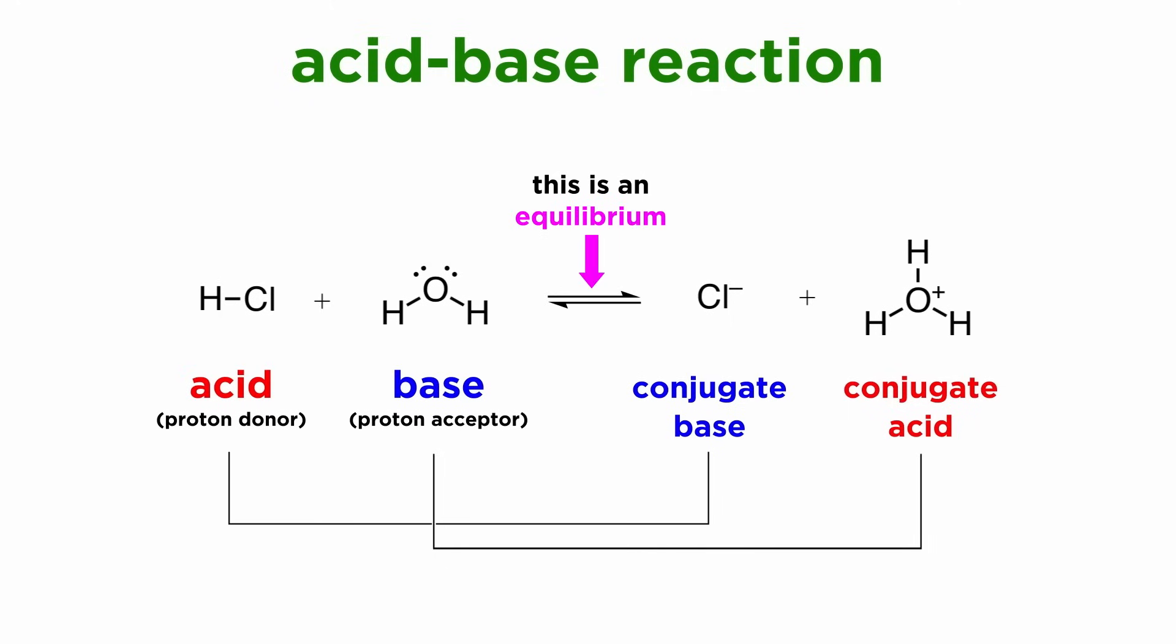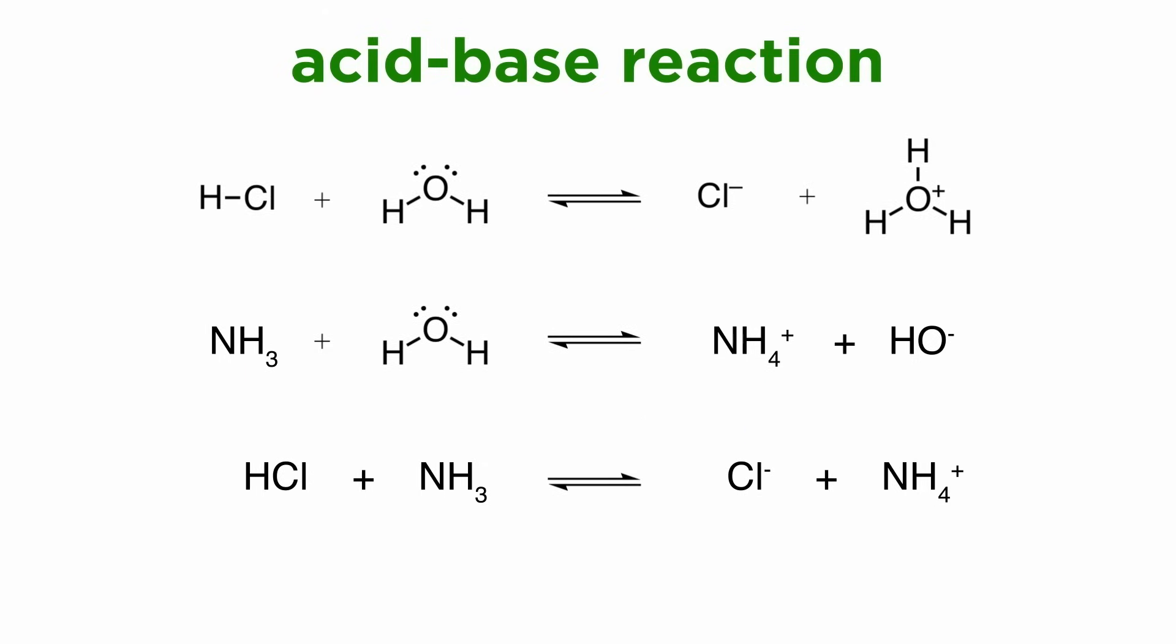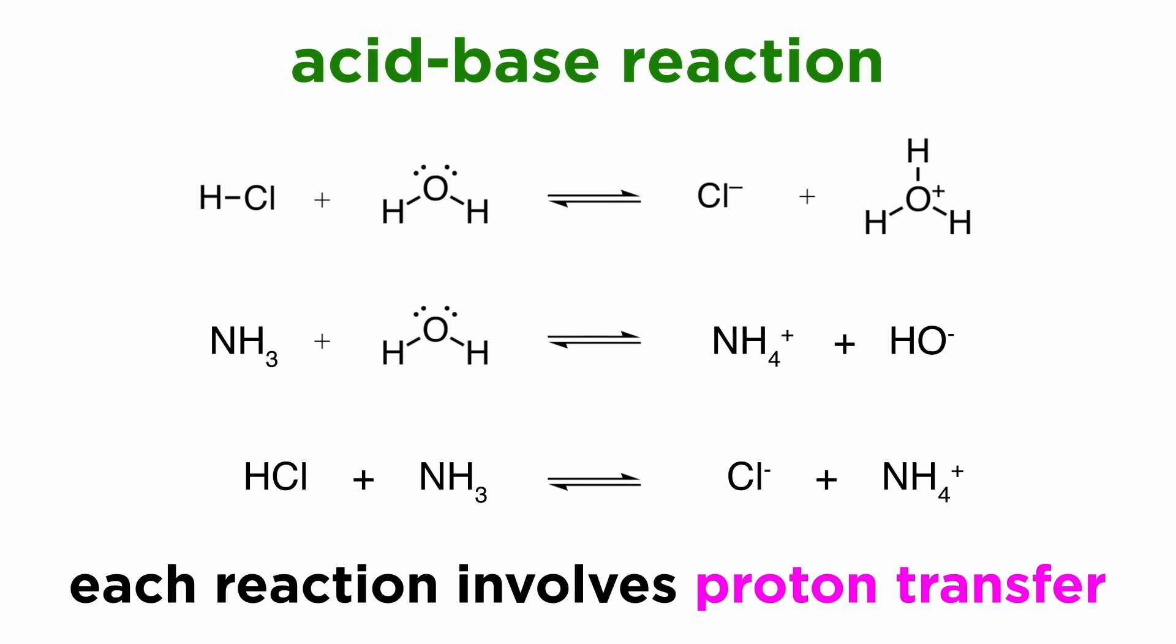Because this process is reversible, we will use equilibrium arrows, as shown here. And of course, we could demonstrate this with numerous other reactions, involving an acid and water, or a base and water, or an acid and a base, and in each case, the chemistry will involve a simple proton transfer to yield two conjugate species.